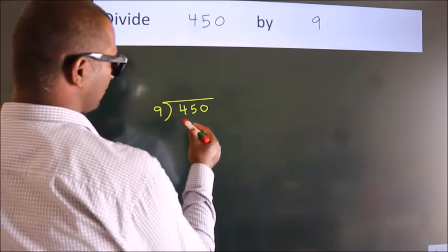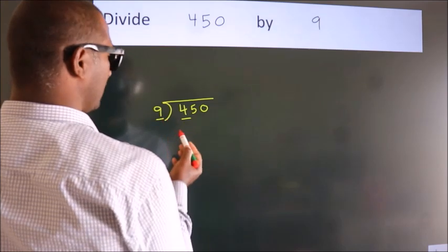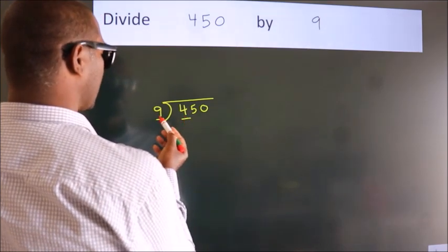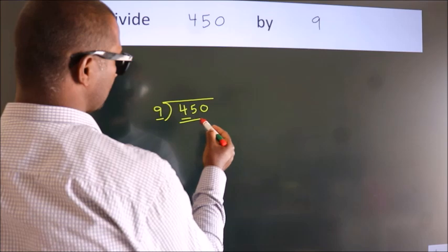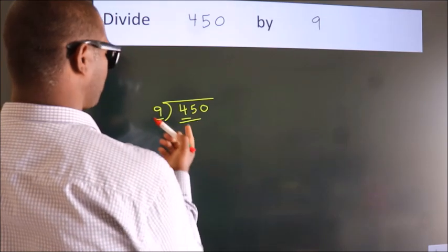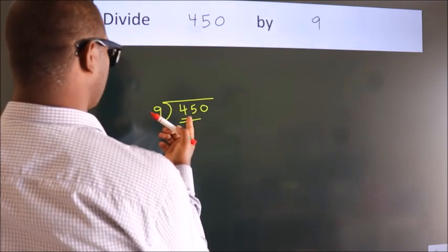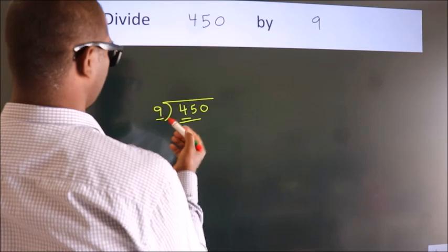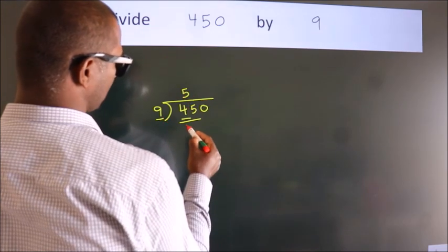here we have 4. Here 9. 4 smaller than 9, so we should take two numbers: 45. When do we get 45? In 9 table. 9 fives, 45.